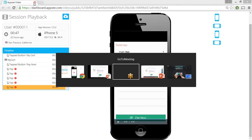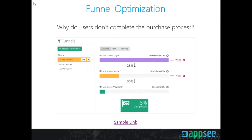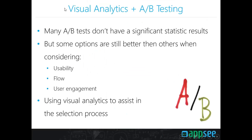We can see the user is frustrated by this performance issue and simply leaves the app. Visual analytics helps us understand these issues — but more importantly, it makes us aware that these issues are even happening. This is another example of how visual analytics can be used to optimize a specific process in the app.